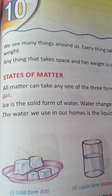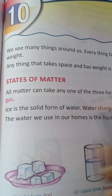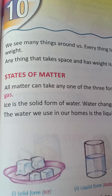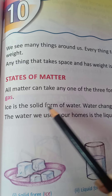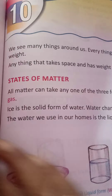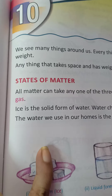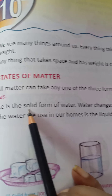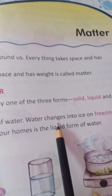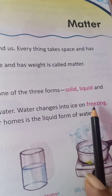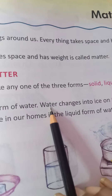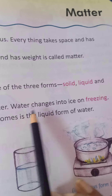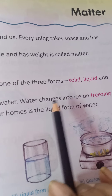We have to understand what is solid, what is liquid, and what is gas form. Ice is the solid form of water. Water changes into ice on freezing — water, which is liquid, changes into ice, which is solid.